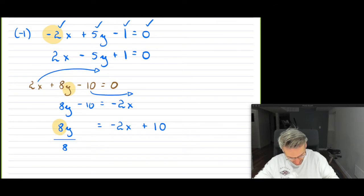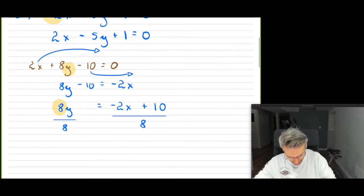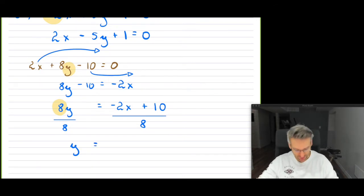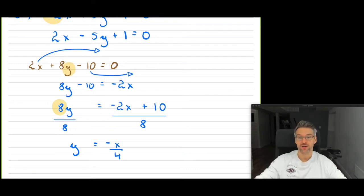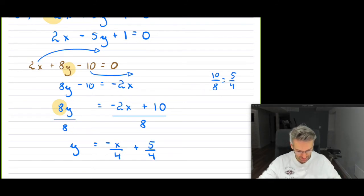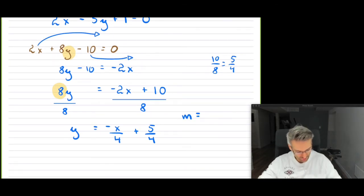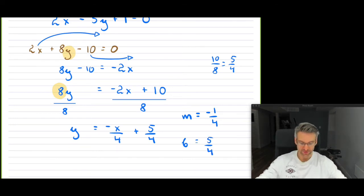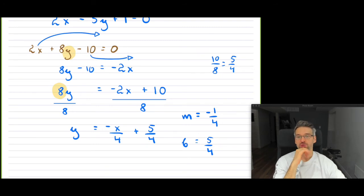Divide both sides by 8. We get Y equals negative 2 over 8 X, which reduces to negative 1 over 4 X, because 2 goes into 8 four times. Then 10 over 8 reduces to 5 over 4. So Y equals negative one-quarter X plus five-quarters. Your slope M is negative 1 over 4, and your Y-intercept is 5 over 4. From here you can graph this using the slope and Y-intercept — the rise over run.